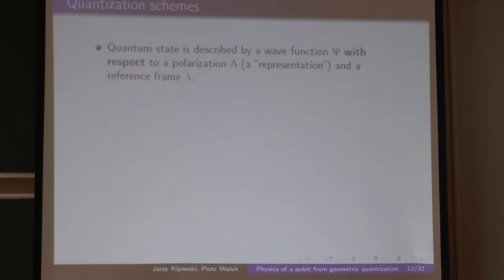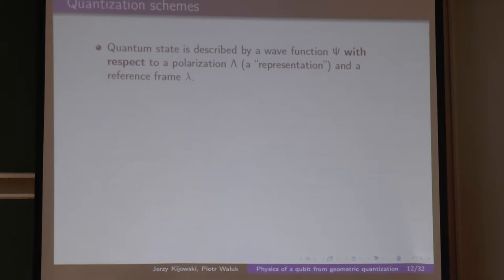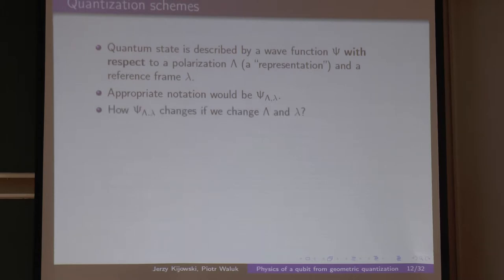To summarize: a quantum state is described by a wave function with respect to a polarization — in physical language, in position, momentum, or whatever representation — but also with respect to a reference frame. If there is a Galilean transformation, then you have to change it. The appropriate notation would be psi with those indices, but I will skip them because it makes the notation very heavy.